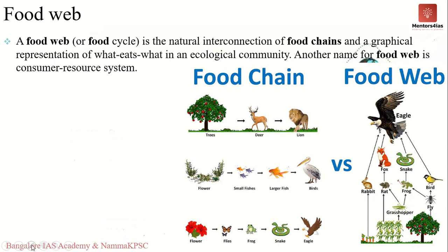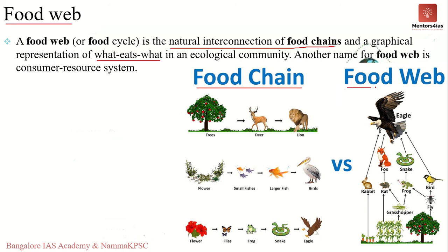A food web is a network of interconnected food chains that contains all the food chains within a single ecosystem. It gives a graphical representation of what eats what within the ecosystem and the dynamics of energy transfer. In any particular ecosystem, rather than simple food chains, you have a very complex network of all the food chains, referred to as the food web.